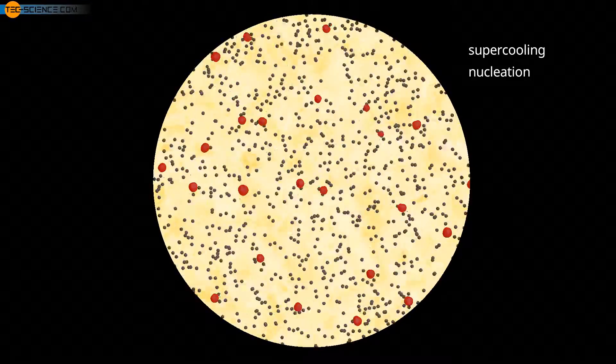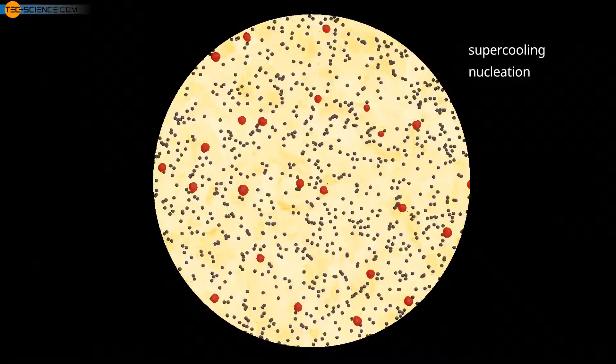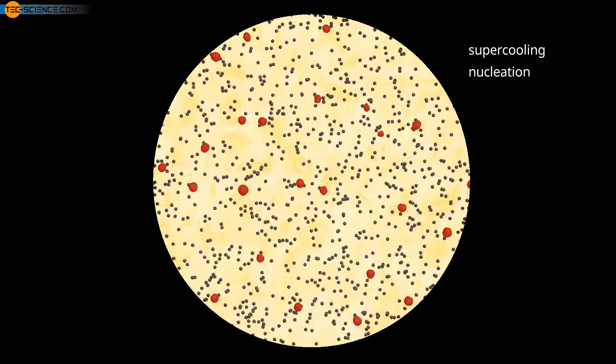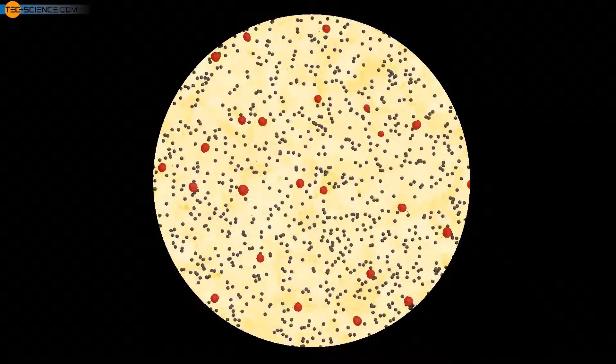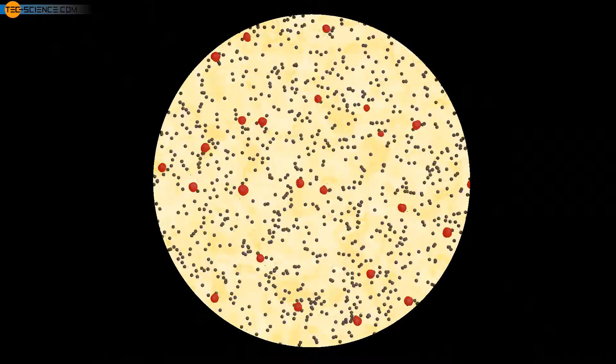However, the melt's own particles can also serve as nuclei. This type of nucleation is then called homogeneous nucleation. Both homogeneous and heterogeneous nucleation will be discussed in more detail in separate videos.